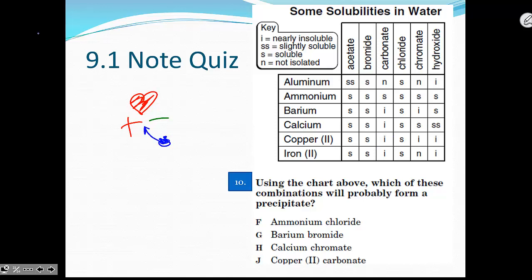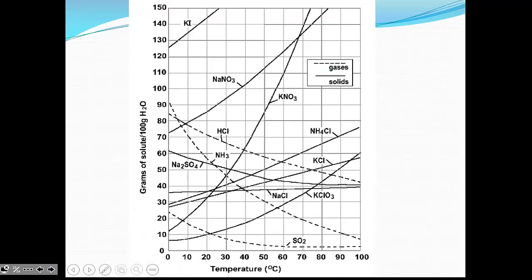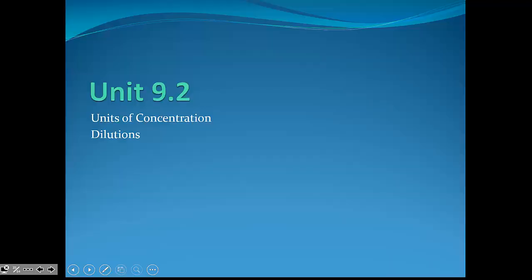We call these insoluble salts. For example, iron hydroxide is insoluble. Less than one percent of it actually dissociates. That should be enough for you to finish your note quiz questions. You'll also be able to do page 12 through 14 looking at solubility curves. Use the solubility curve on page 13. I will see you next time when we talk about the different units of concentration.